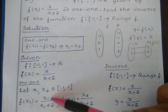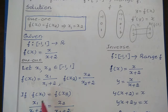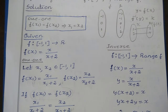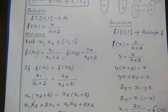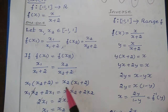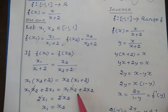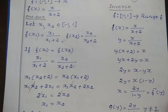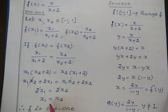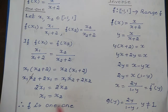From the definition of the function, f of x1 is equal to x1 divided by x1 plus 2, and f of x2 is equal to x2 divided by x2 plus 2. Now if f of x1 is equal to f of x2, then x1 divided by x1 plus 2 is equal to x2 divided by x2 plus 2. Cross multiplying: x1 into x2 plus 2 is equal to x2 into x1 plus 2, giving x1 x2 plus 2x1 equals x1 x2 plus 2x2. The x1 x2 terms cancel, leaving 2x1 equals 2x2, so x1 equals x2. Since f of x1 equals f of x2 implies x1 equals x2, the function is 1-1.